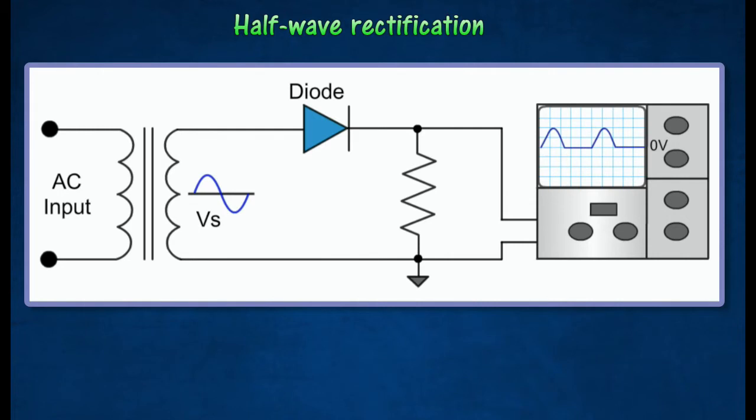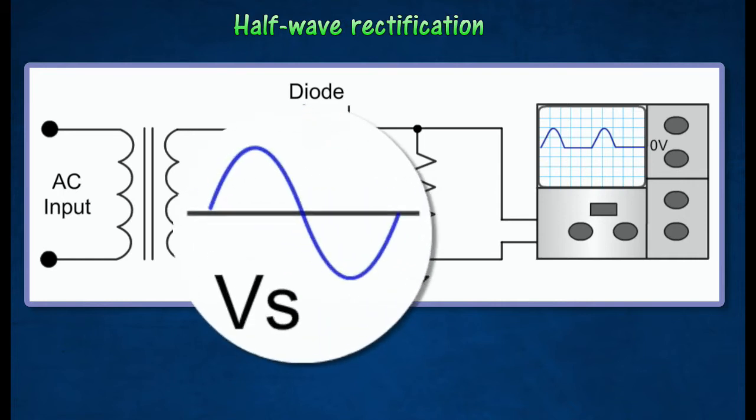The input is an alternating source, and the output is connected to the Y input of a cathode ray oscilloscope. The direction of the alternating current changes repeatedly according to the power supply voltage as shown in the diagram.